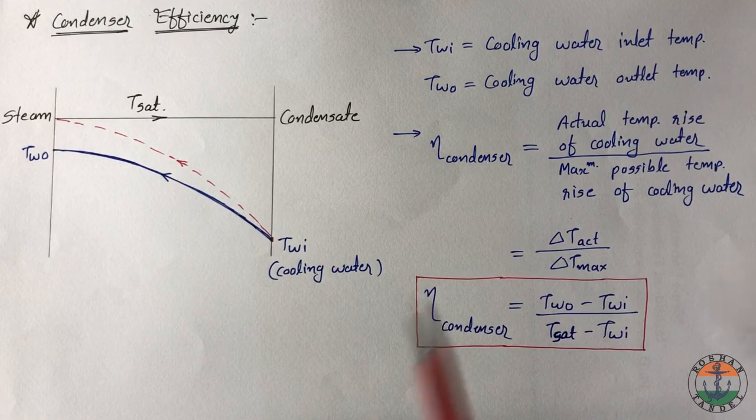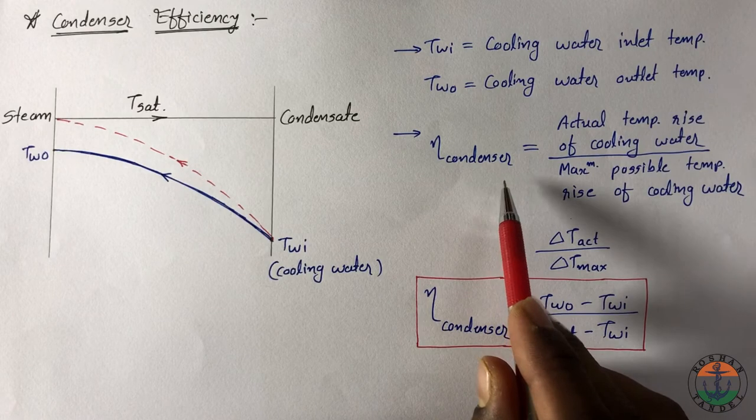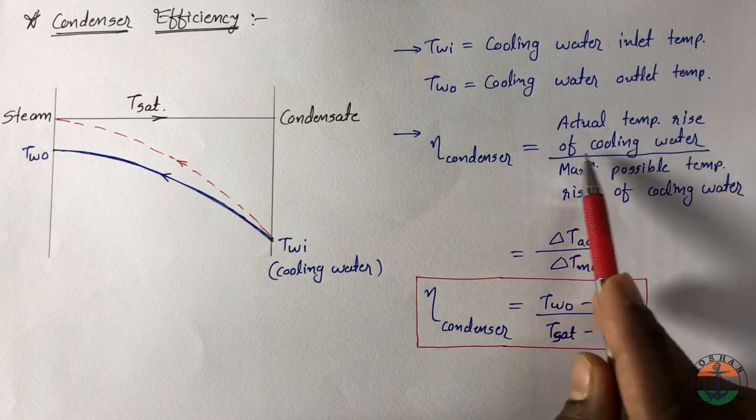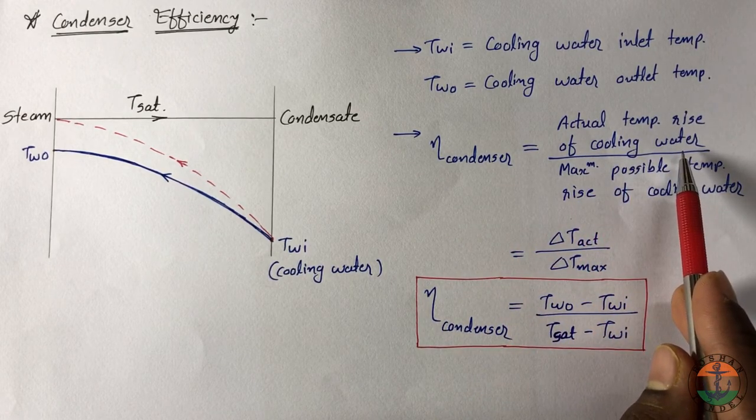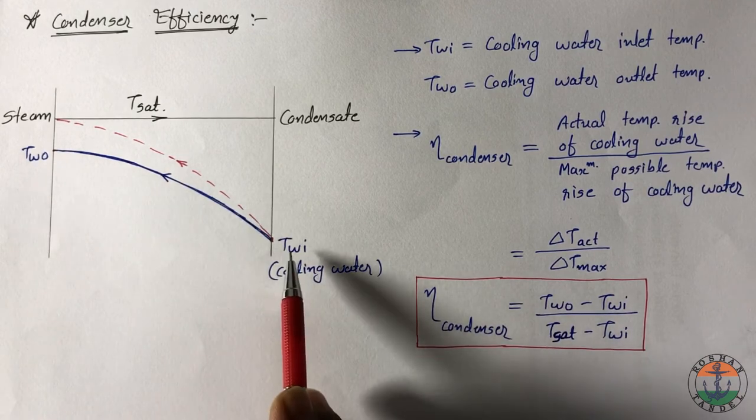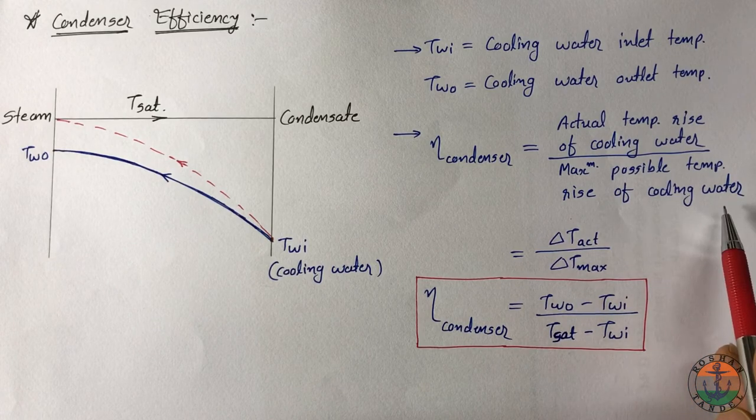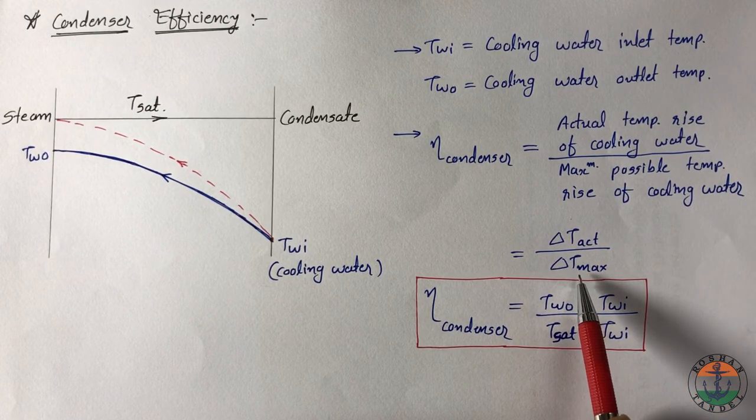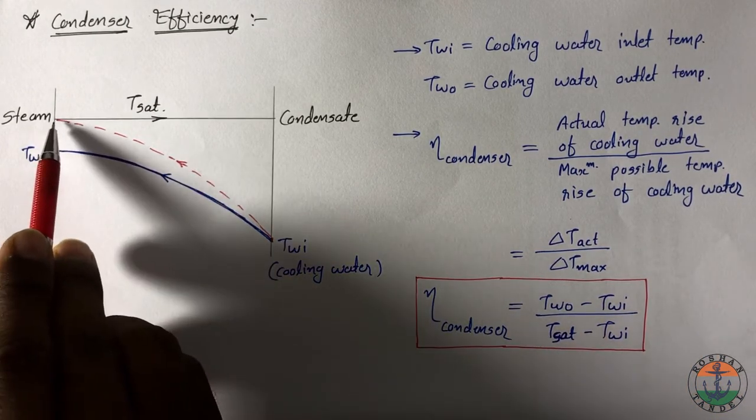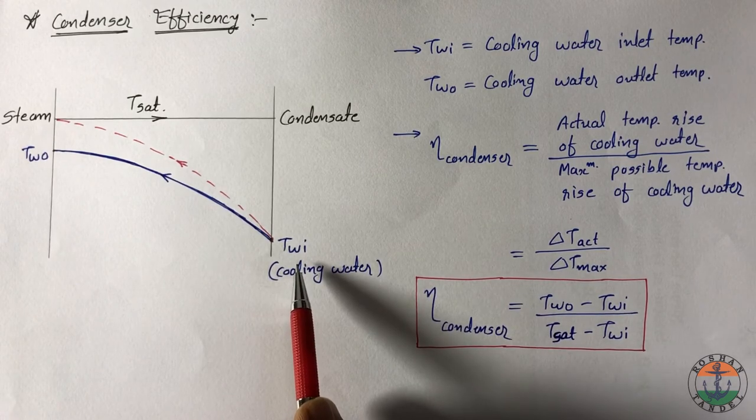So based on that, condenser efficiency is defined as actual temperature rise of cooling water which is equal to Two minus Twi divided by maximum possible temperature rise of cooling water delta Tmax, which is taken as T saturation minus Twi.